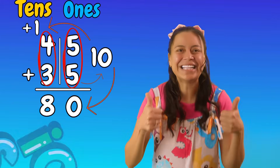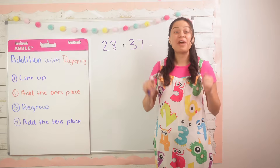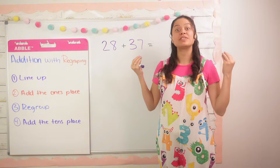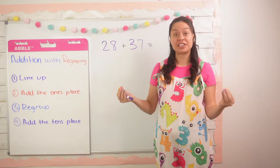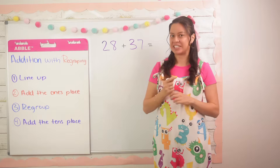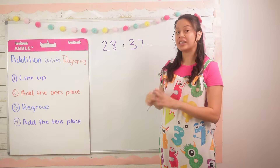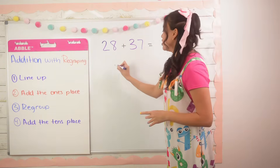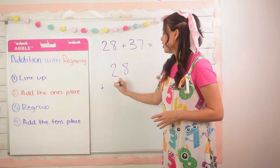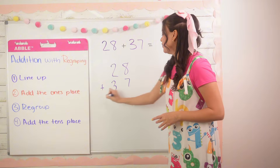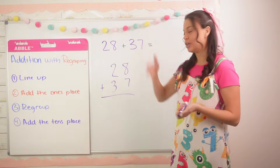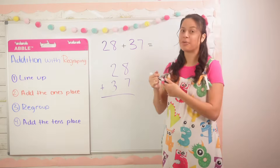Are you ready to try this new strategy? Let's go! Our first example is 28 plus 37. We're going to use the standard algorithm. Step one is to line up our numbers using their place value, so I'm going to rewrite this problem vertically: 28 plus 37. I'll draw a line straight down the middle to separate the ones and the tens place.